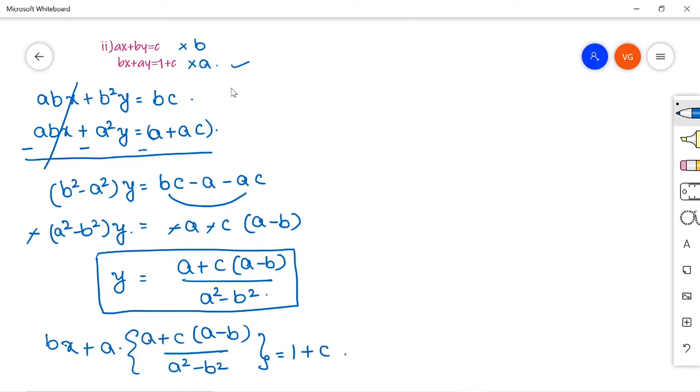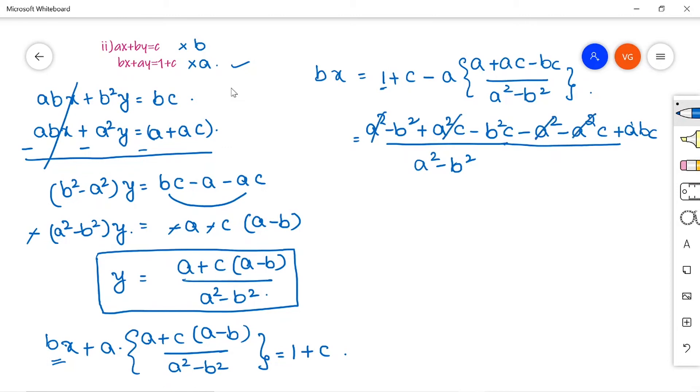So as I need the value of X, I will just keep BX on my right hand side. And the remaining everything I will take it to the left hand side. So 1 plus C minus A multiplied by A plus AC minus BC divided by A square minus B square. So now I will take LCM here. A square minus B square if I take LCM, for C I will multiply plus A square C minus B square C. Then the numerator will be here minus A square minus A square C plus ABC. So let us check any of the terms are getting cancelled. A square will get cancelled and A square C also will get cancelled.